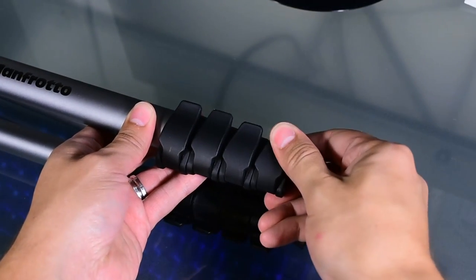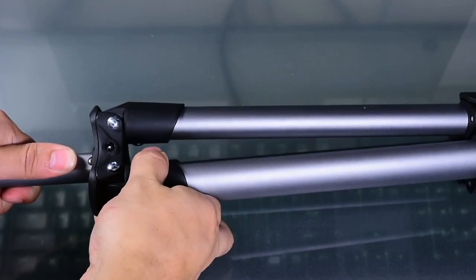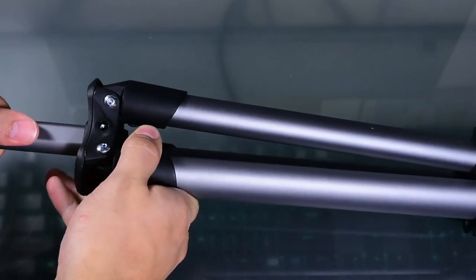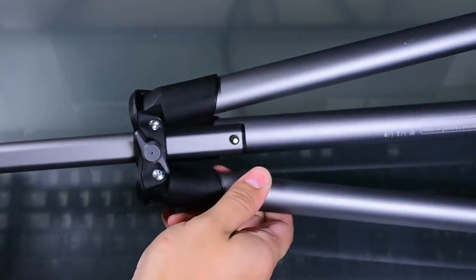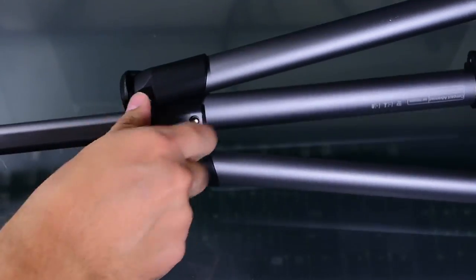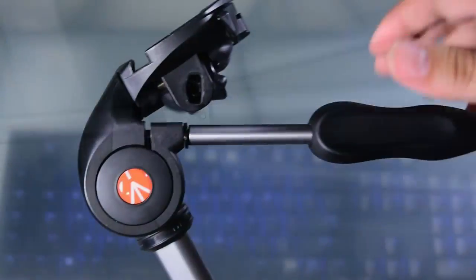To connect the head on the tripod, you need to press down on the push button while inserting it to the tripod. To lock the head in position, just tighten the side knob.